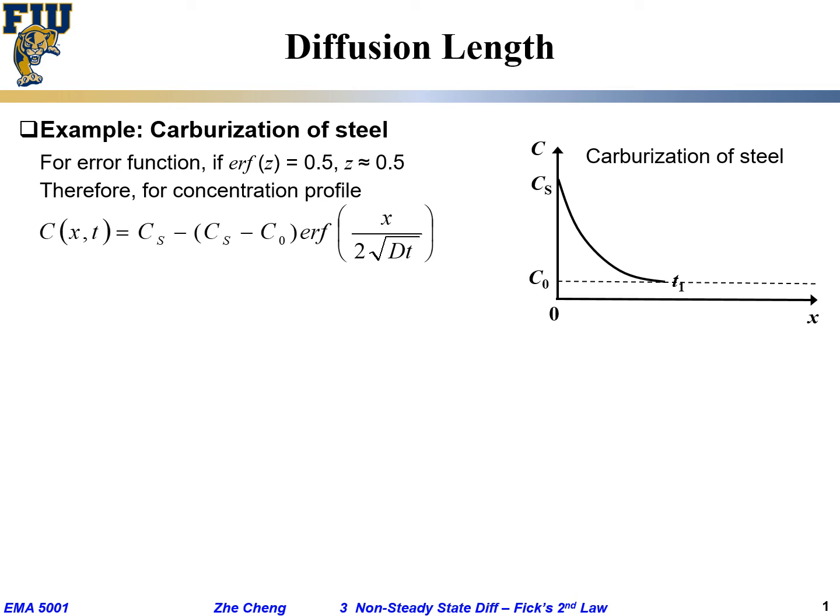Now let's talk about a very important concept of so-called diffusion length. We are looking at the example of carburization. Carburization means you are driving carbon into the material. For simplicity, assume its original concentration carbon is C0, which means deep within the material it always stays at zero.